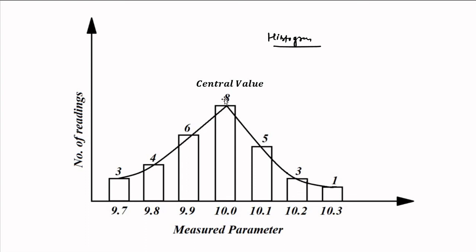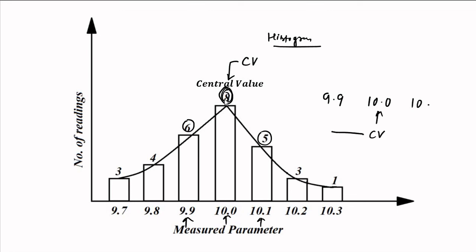In total we have 30 readings. The maximum grouping appeared at 10, with 8 readings — this is the central value. Around this central value, the next highest readings were 6 for 9.9 and 5 for 10.1. So most readings were scattered around these three values: 9.9, 10.0, and 10.1. This demonstrates the concept of central value, where the maximum grouping occurs.